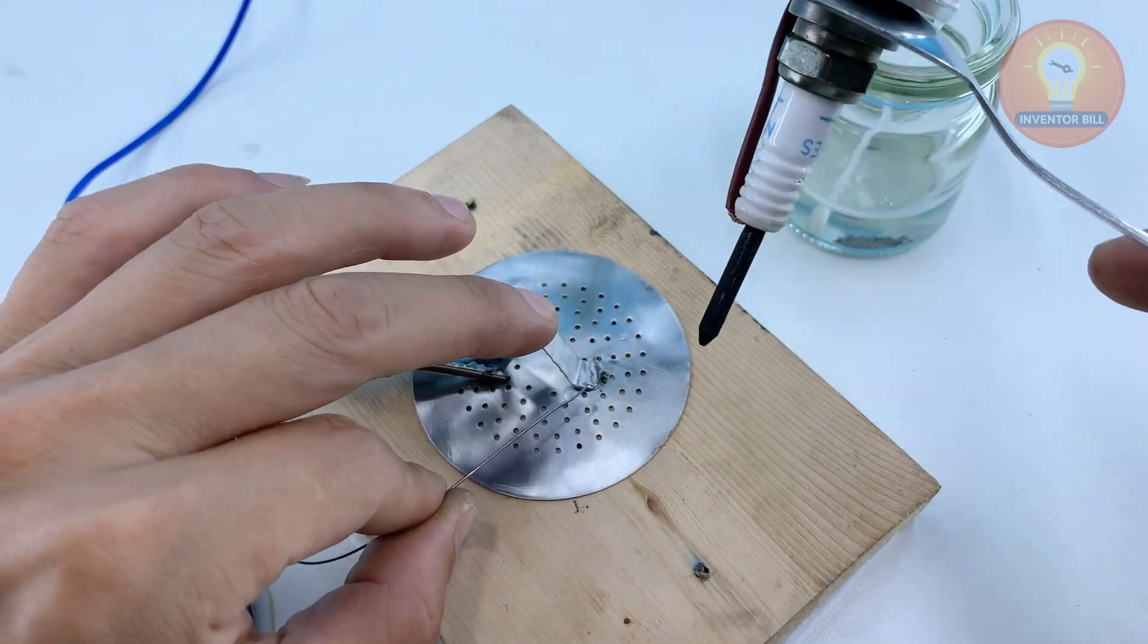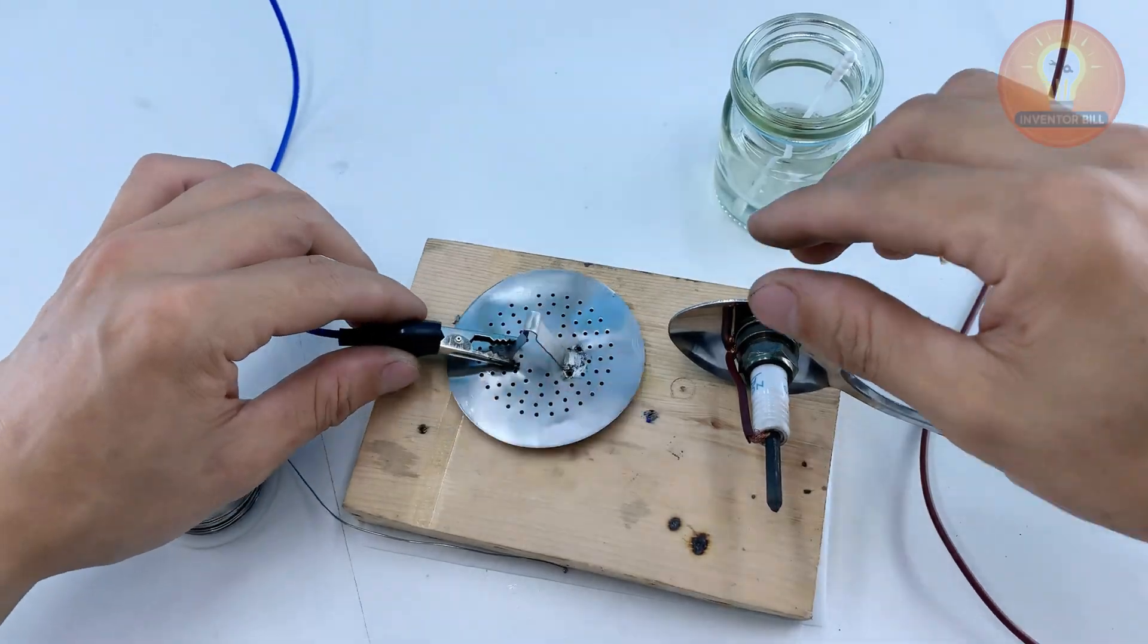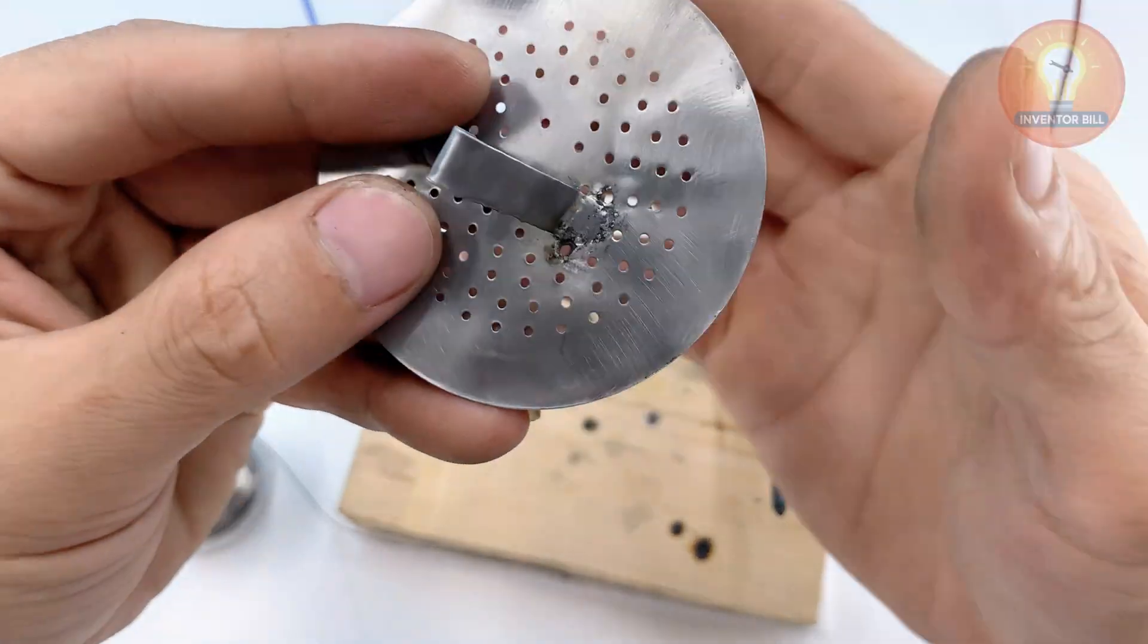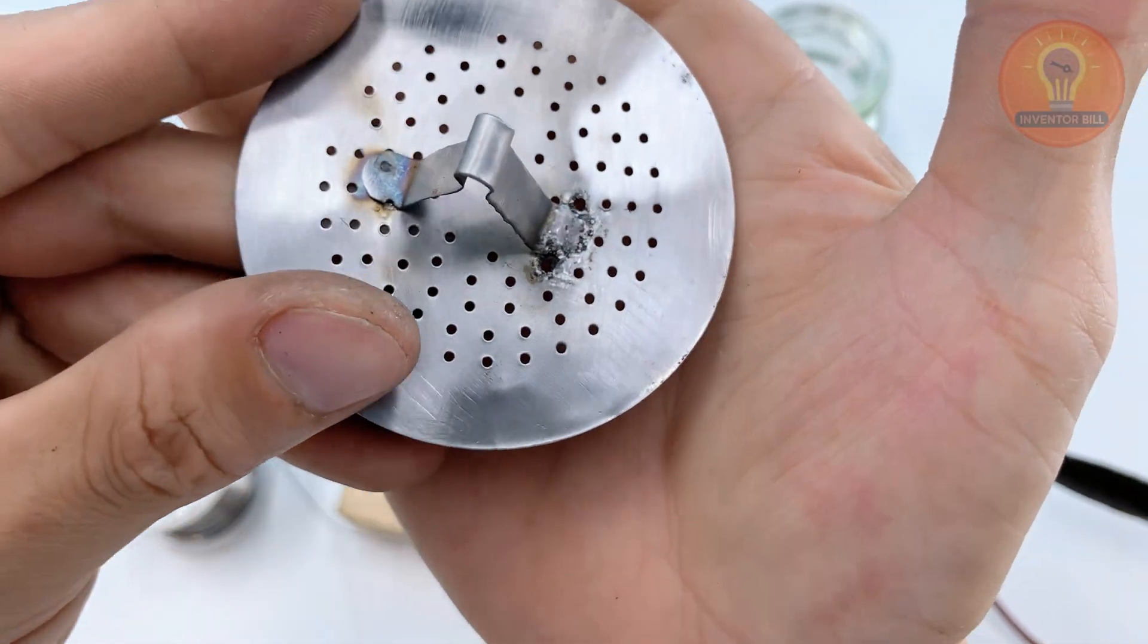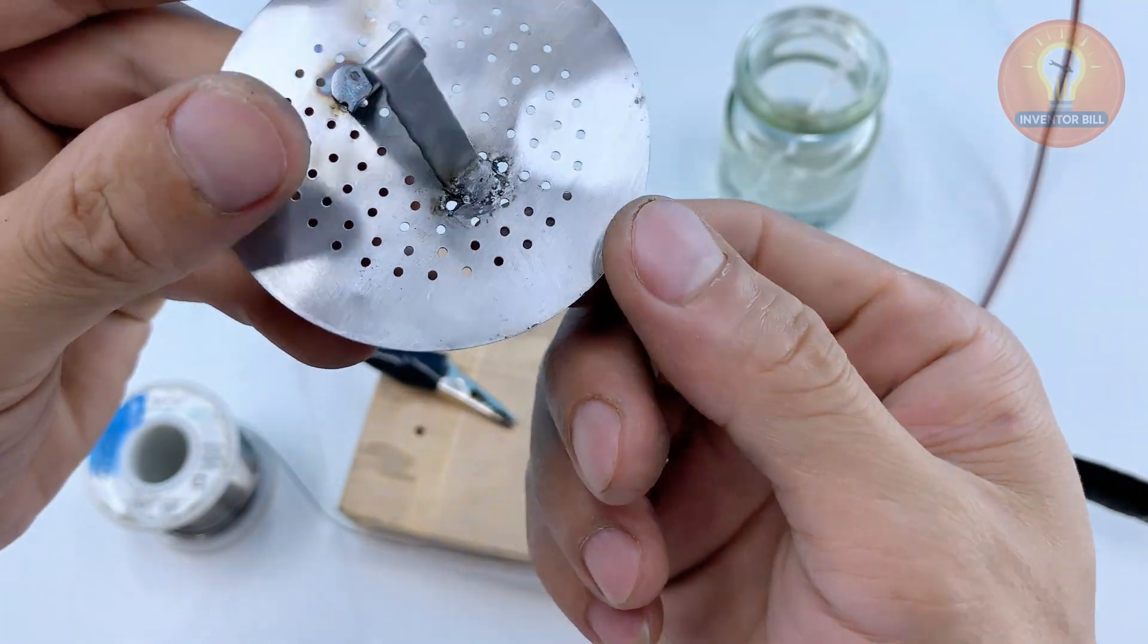As I bring the carbon tip back in, you can see the weld start to melt smoothly and lock into place. The joint tightens up fast and holds firm, showing that this simple spoon-based tool can actually bond stainless steel when you prep the surface the right way.